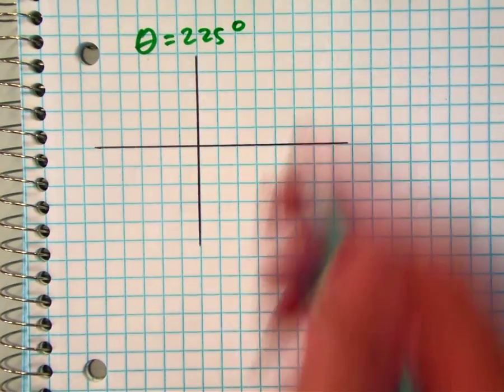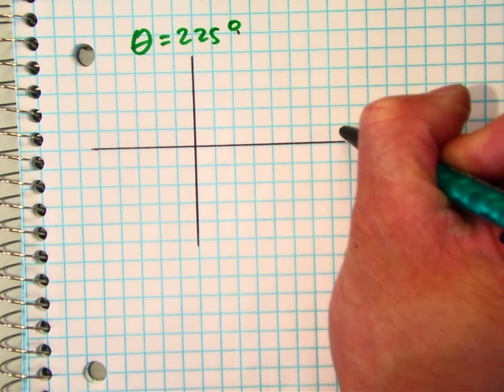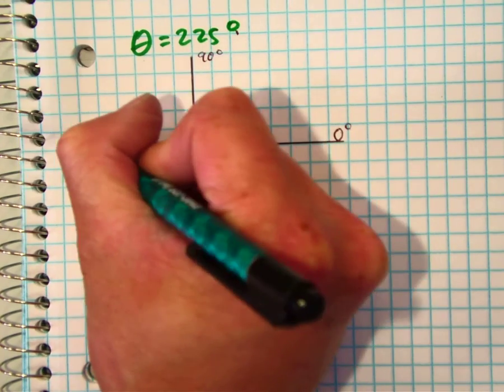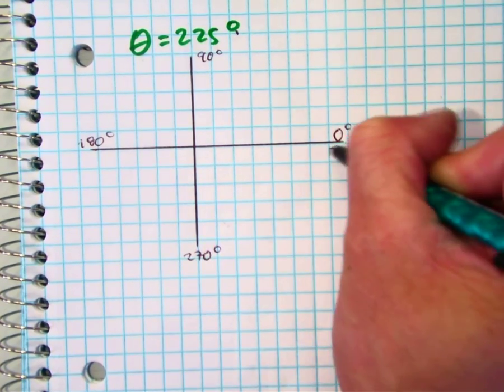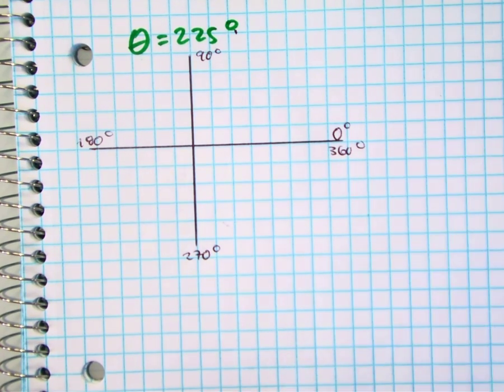Class, let's count the quadrantal angles and degrees. Here, here, here, here, here. I need 227 degrees.